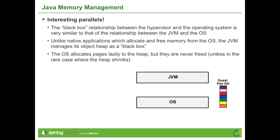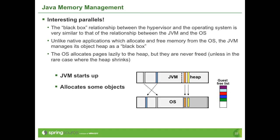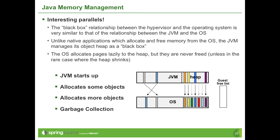Let's look at an example. The JVM starts up and allocates some memory for its own internal use, with the heap allocated as a single contiguous chunk in the operating system. As an application starts and the JVM creates objects in the heap, writes to virtual memory cause the operating system to lazily back that with physical memory. When a garbage collection occurs, the operating system has no idea it happened, so while there's now free memory available to the JVM, that memory is no longer available to other applications running in the guest.